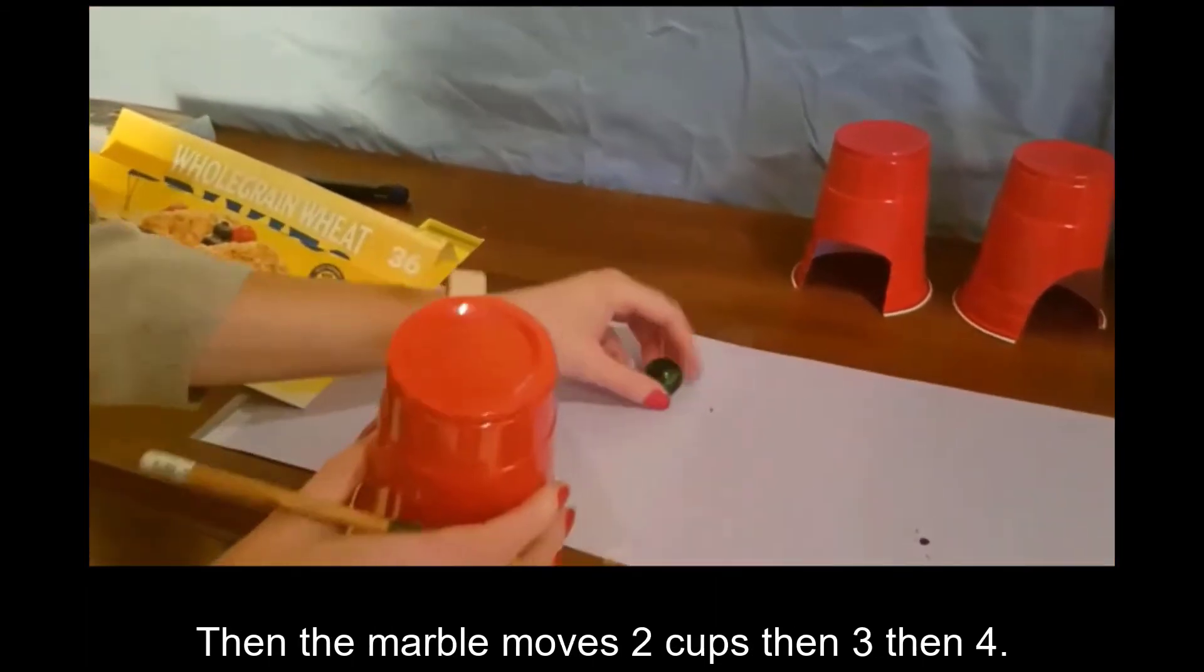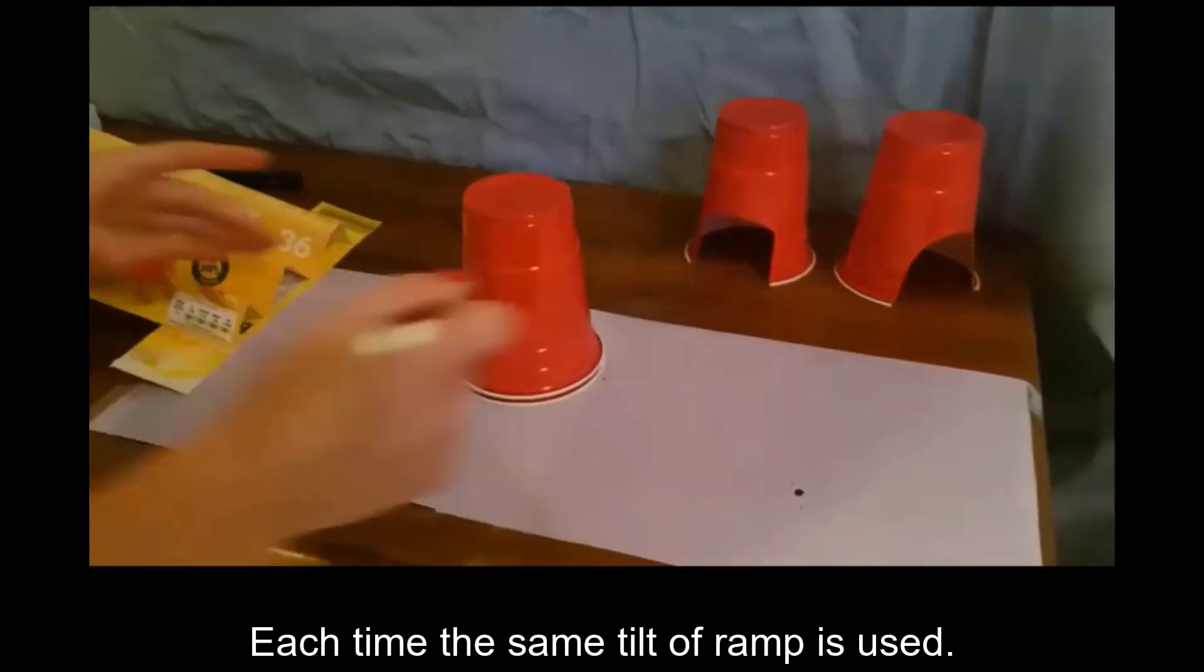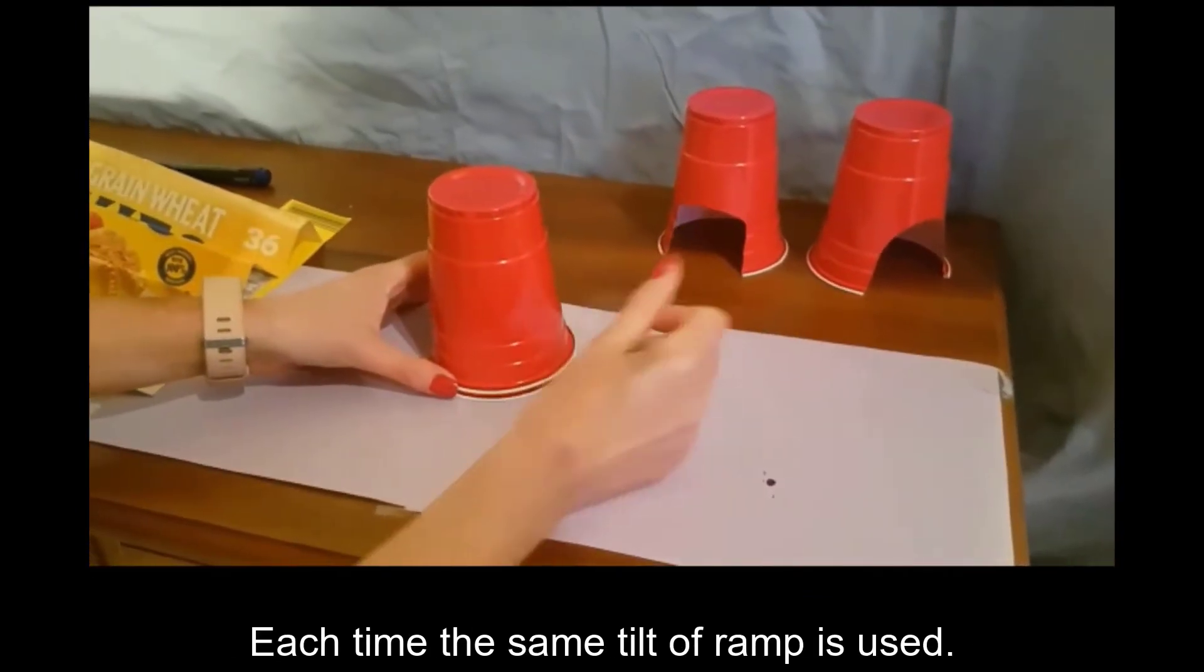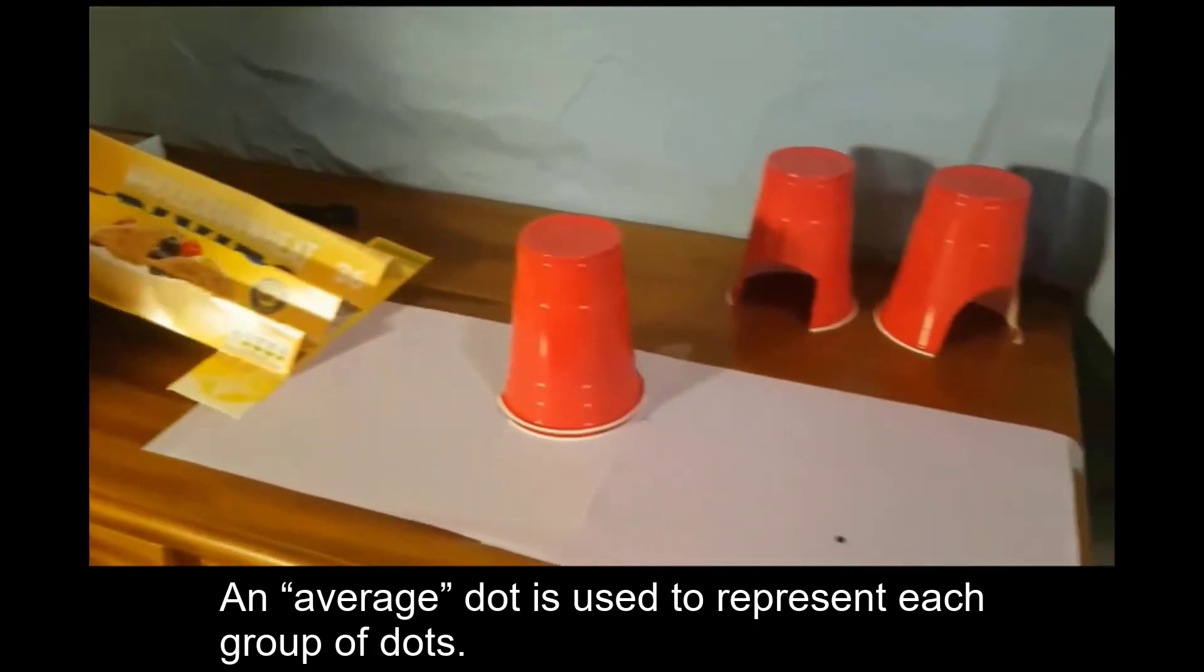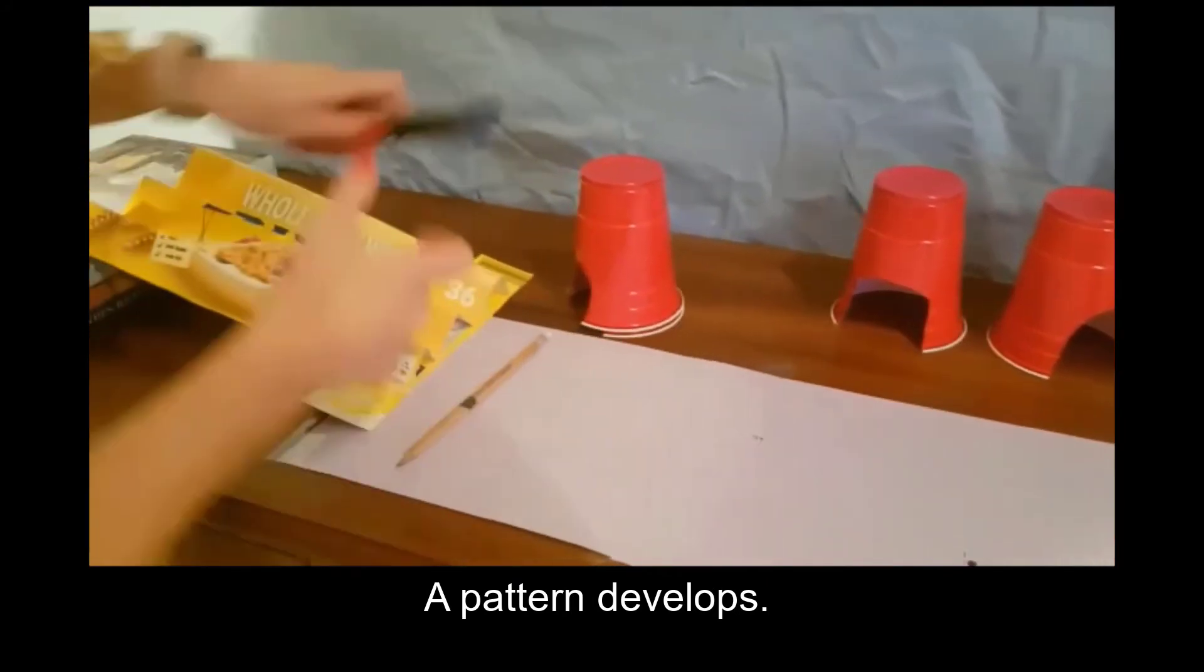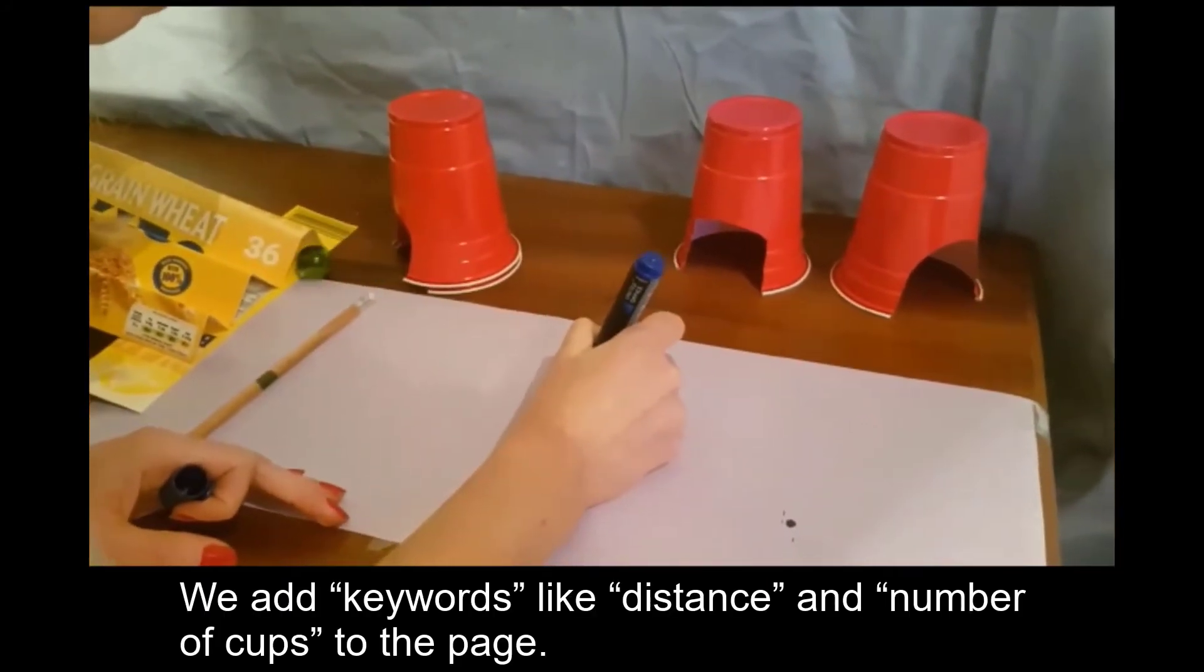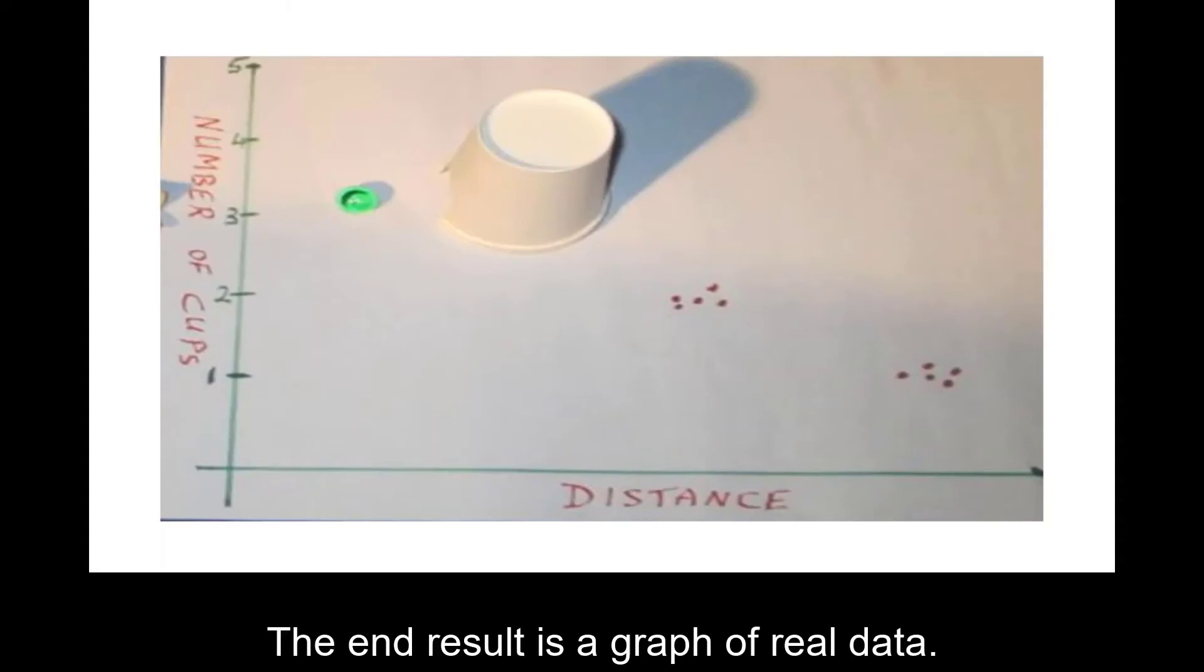Then the marble moves two cups, then three, then four. Each time the same tilt of ramp is used. An average dot is used to represent each group of dots. A pattern develops. We add keywords like distance and number of cups to the page. And the end result is a graph of real data.